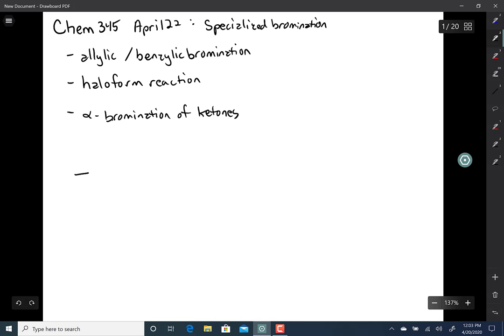Let's start with allylic and benzylic bromination. You might recall from Chem 343, if you treat an alkene with bromine, you end up getting dibromide, with the bromines adding anti to each other.